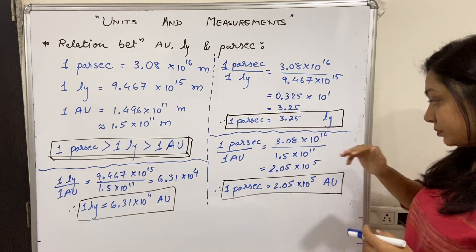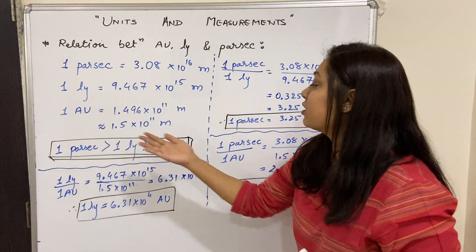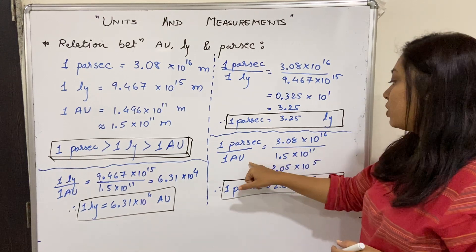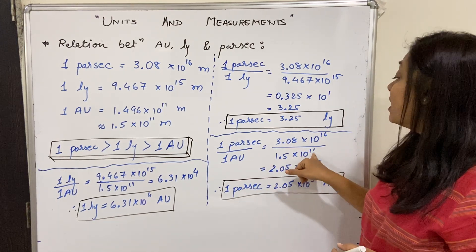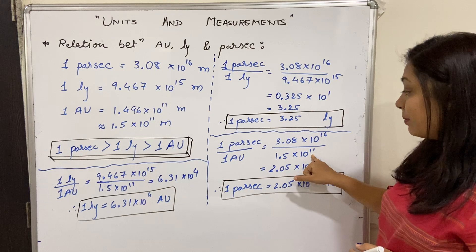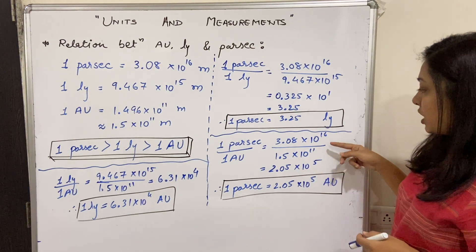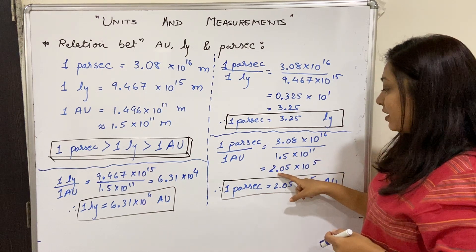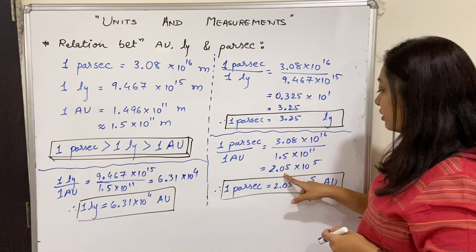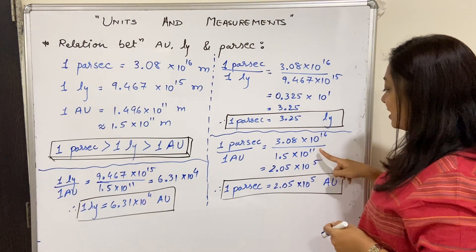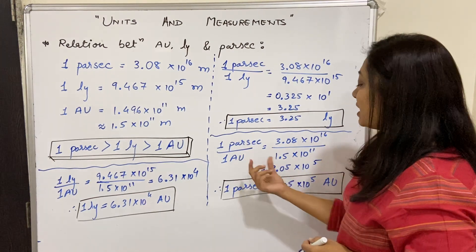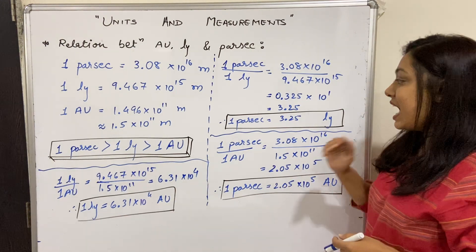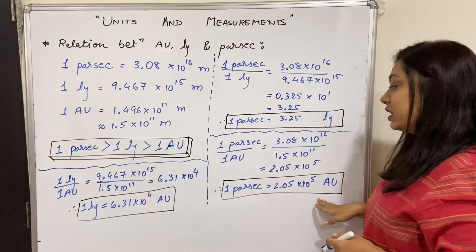We take the ratio: one parsec is 3.08 × 10^16 meters, one astronomical unit is 1.5 × 10^11 meters. So one parsec equals that many astronomical units. We've now compared parsec to light year and parsec to astronomical unit.